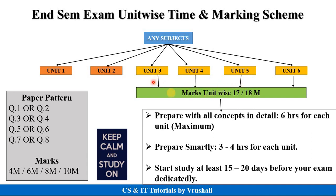For example, 17 to 18 marks on unit 3, 17 to 18 marks on unit 4, and 17 to 18 marks on units 5 and 6 accordingly. You need to prepare as per the marks — covering all the important topics in each unit. Regarding preparation time, if you prepare all concepts in detail, you need about 6 hours for 1 unit. But if you prepare smartly, you need only 3 to 4 hours for each unit. I will tell you next how to prepare smartly.